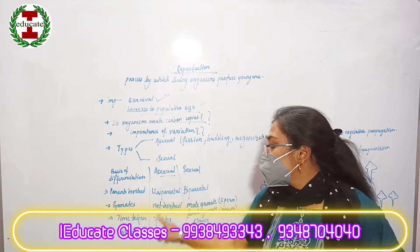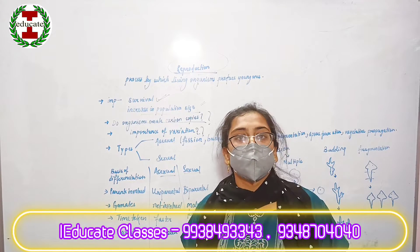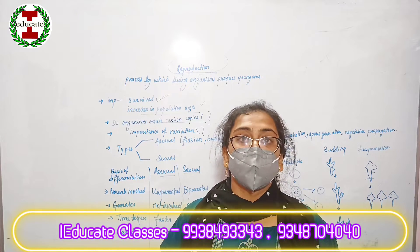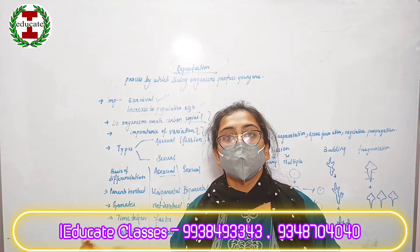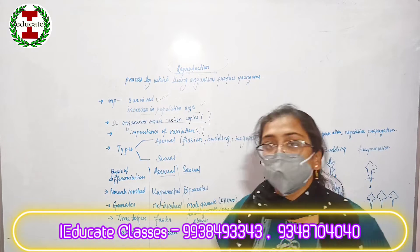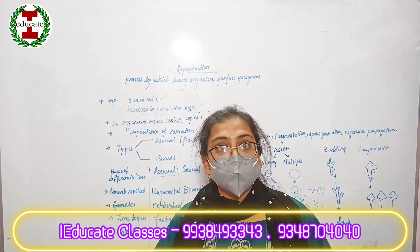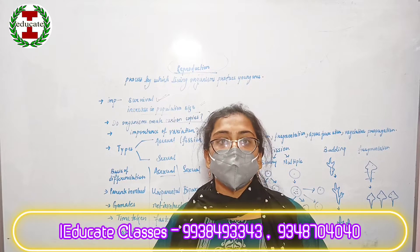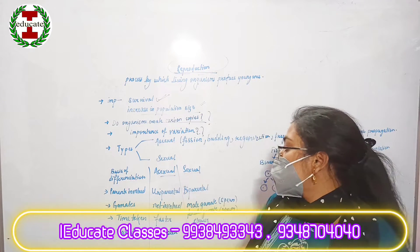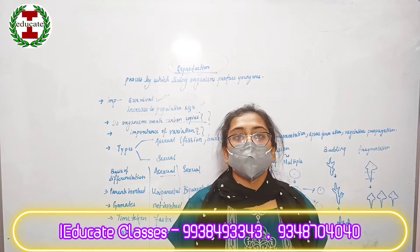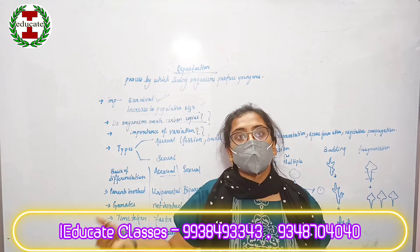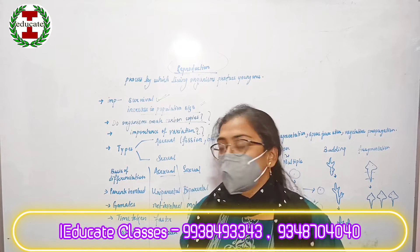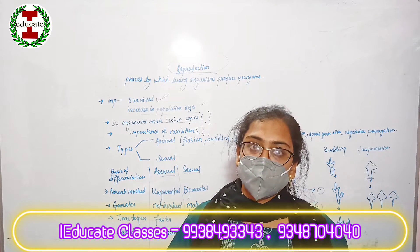The time taken for asexual reproduction is obviously faster because it involves only one parent. But during sexual reproduction, it is a slower process because one has to wait for the partner's sexual maturity. Variation means the differences or variety we see in organisms during the evolutionary process that helps the organism to survive. In asexual reproduction, we don't see variation because it is uniparental — they carry on the parental characteristics and don't really evolve. But in sexual reproduction, variation is easily seen.